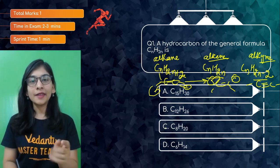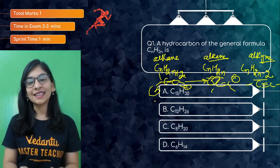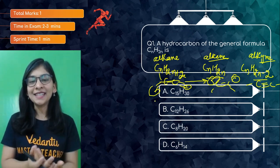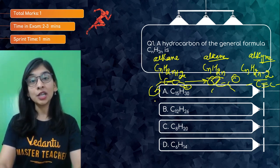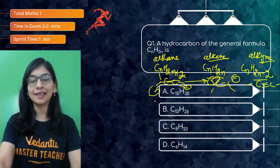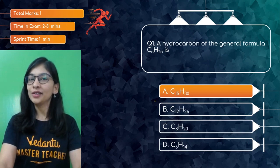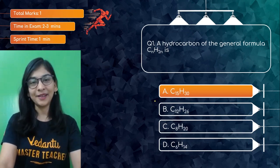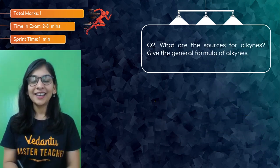The question asks us to identify CnH2n — where hydrogen is double the number of carbons. Looking at the options, C15H30 fits this formula. Let me know in the comment section what you call C15H30. The formula is easy — just match the pattern and identify it as an alkene.